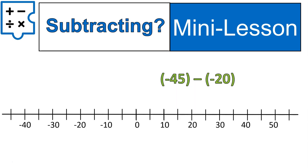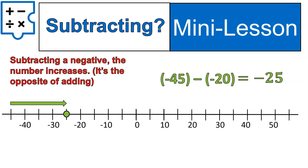Let's practice another one like that: negative 45 minus negative 20, or negative 45 take away negative 20. I start at negative 45, I take away 20 of those negatives, and that brings me to only being negative 25. So the number actually increased or moved to the right on the number line. Again, subtracting negatives is the opposite of adding.